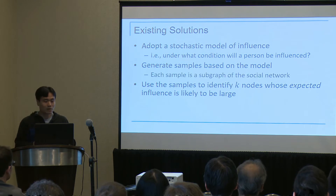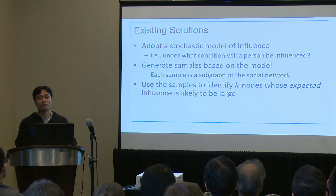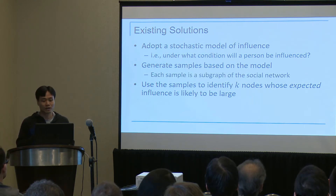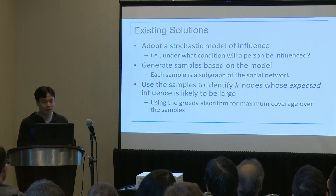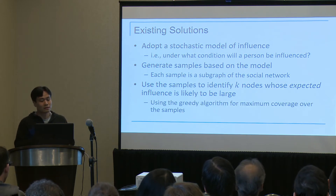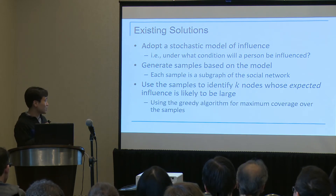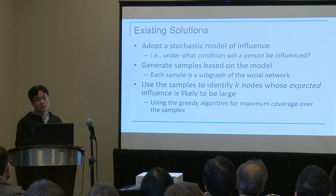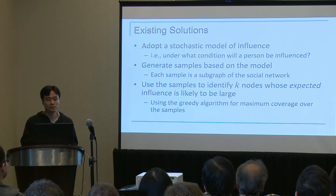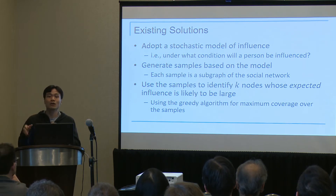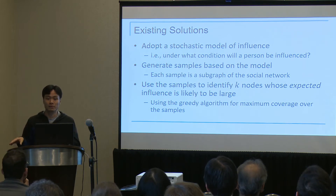More specifically, each sample is a subgraph of the social network generated in a certain way, and the identification of those K nodes is usually done using the greedy algorithm for maximum coverage run over the samples.